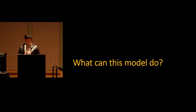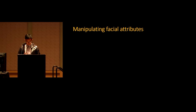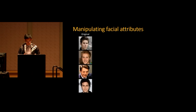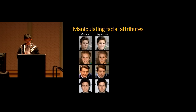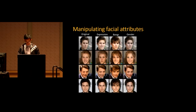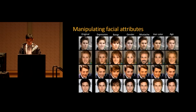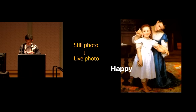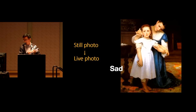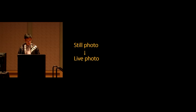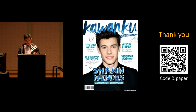The control vector determines which attribute to change — by using another control vector, we can change the expression instead of the gender. We can also control the edit strength by changing the scale of the control vector. Our model can manipulate facial attributes like expression, beard, gender, hair color, and more. By continuously changing expressions, we can handle tasks like converting a still photo to a live photo. This paper presents an alternative framework for unpaired image-to-image translation that allows for multi-modal, multi-domain, and continuous translation simultaneously. Please visit our poster number 127.